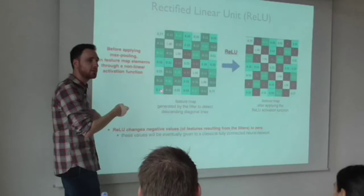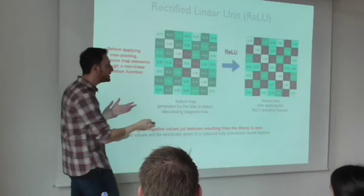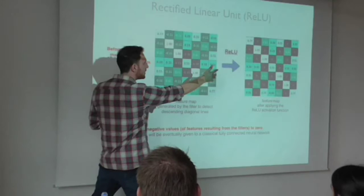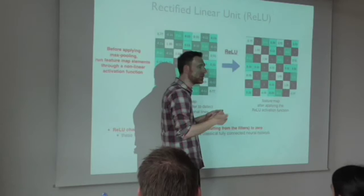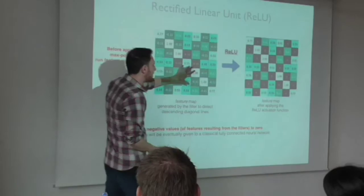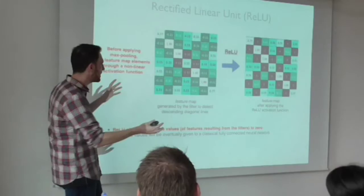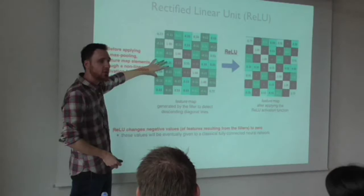That's what they call the vanishing gradient. Intuitively, what that means is that if you have really long networks, the information about how to adjust the weights at the end of the network is really strong — you're really sure how to update those weights. But as you move to the earlier layers of the network, that information kind of dissolves. You're not really sure; everything tends to zero.